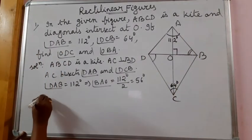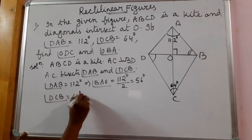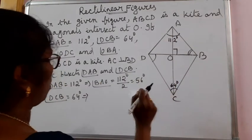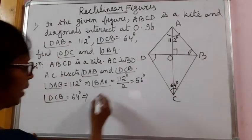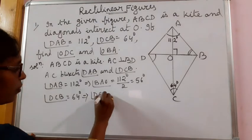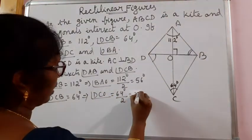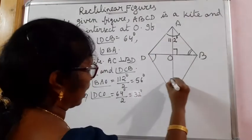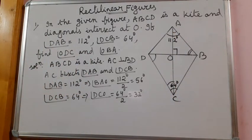Same way, angle DCB is 64 degrees. AC bisects angle DCB also. So this angle we want. Therefore, angle DCO is equal to 64 degrees by 2, that is 32 degrees. That means only this angle is 32 degrees and only this angle is 56 degrees we got.